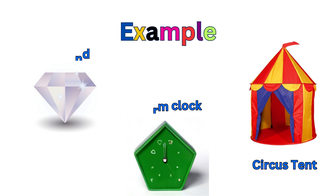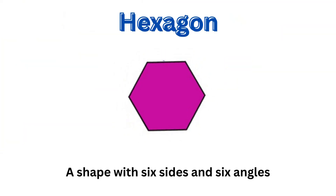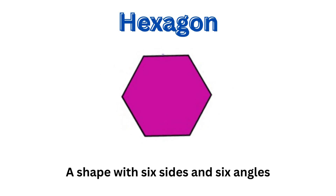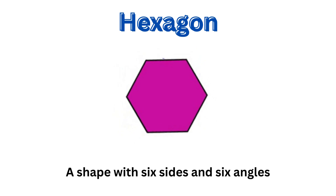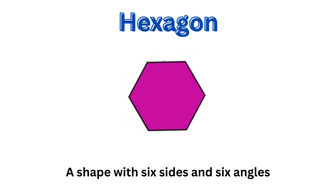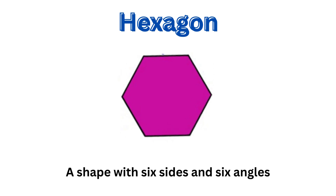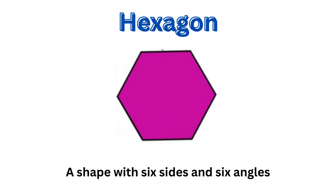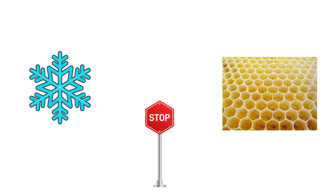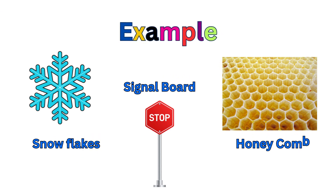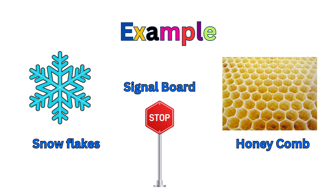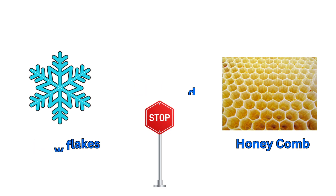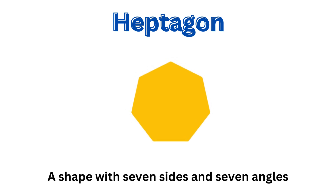This shape is a hexagon — a shape with 6 sides and 6 angles. Examples for hexagon are snowflakes, a stop sign, and honeycomb.